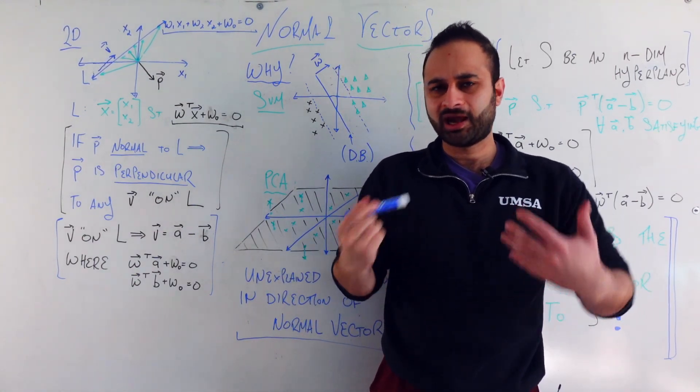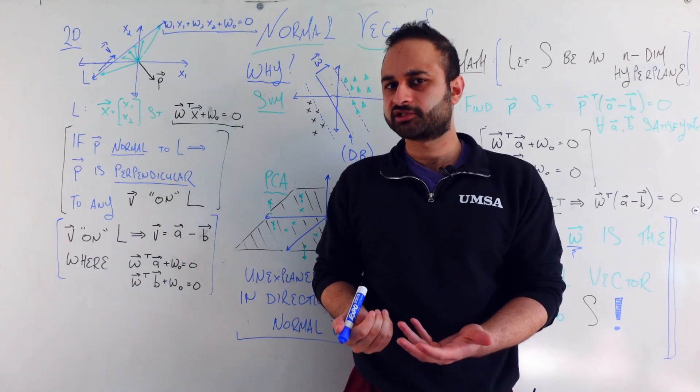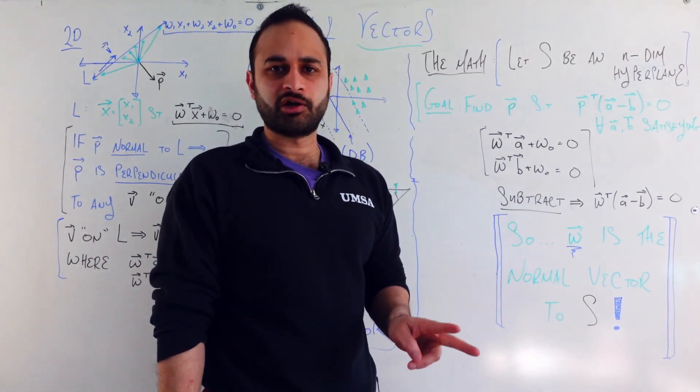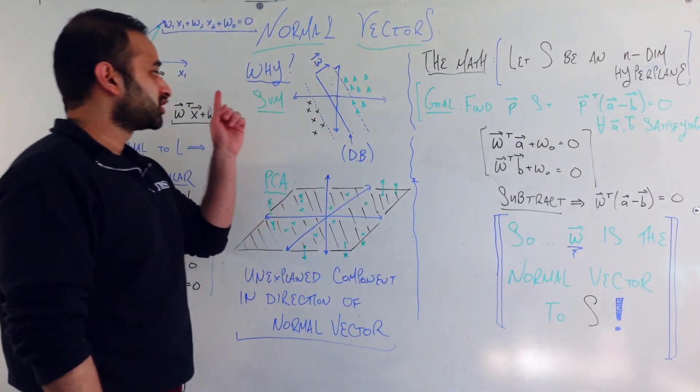Now let's kind of think about why we care about this concept of being perpendicular, normal, orthogonal to things. So let's talk about two of the big concepts, two of the big topics in data science. There's of course others, but just two of them are.